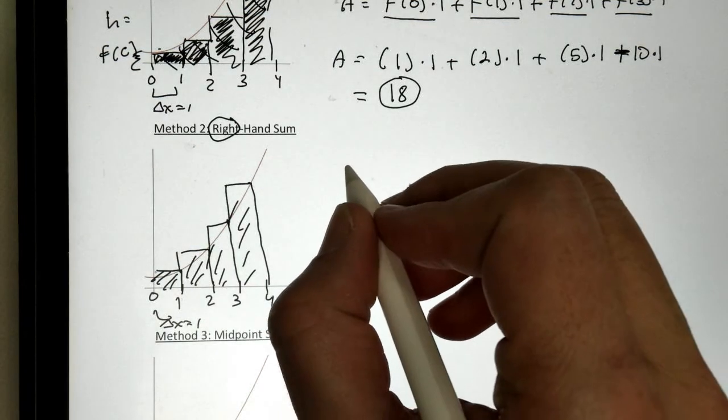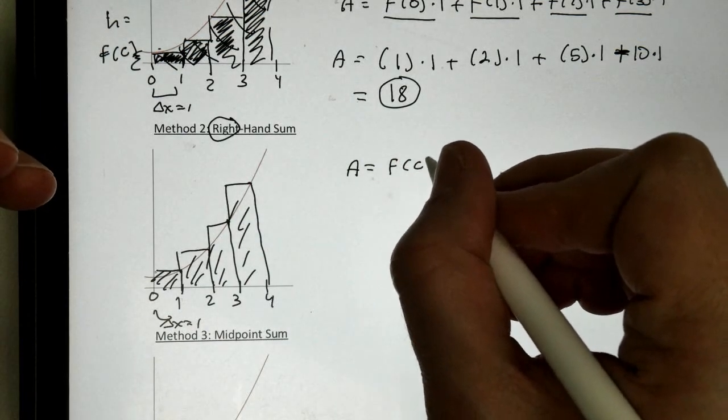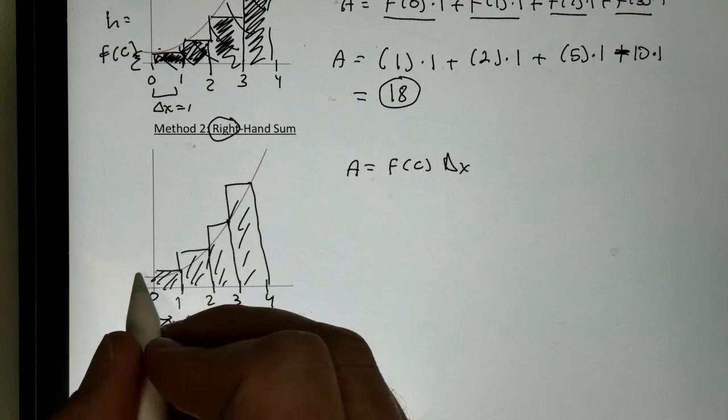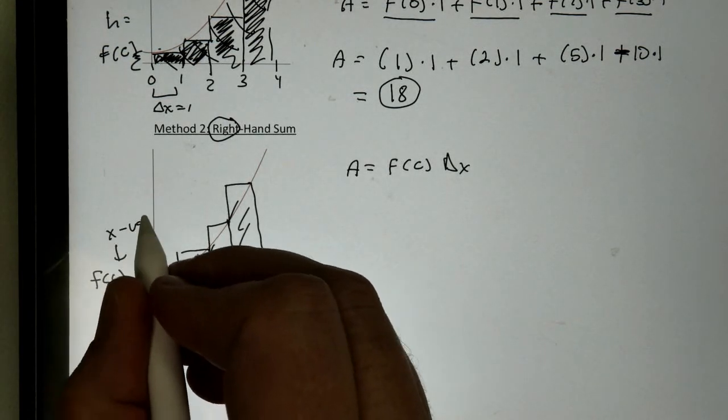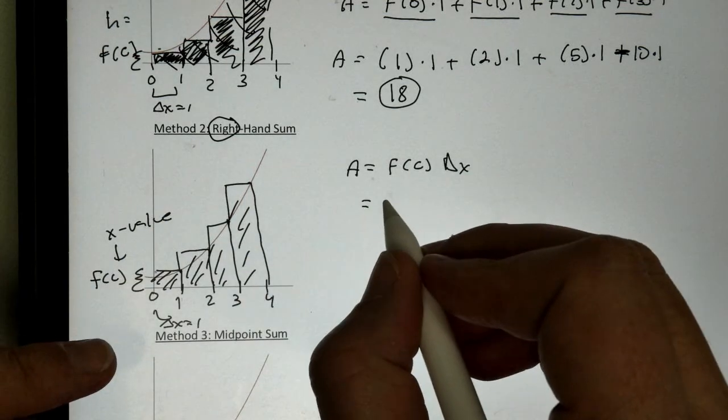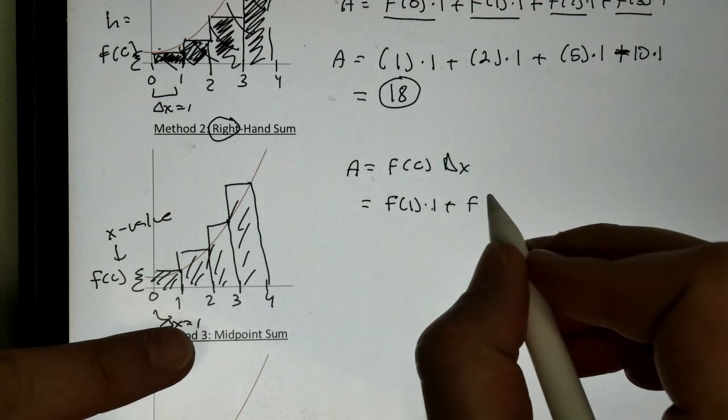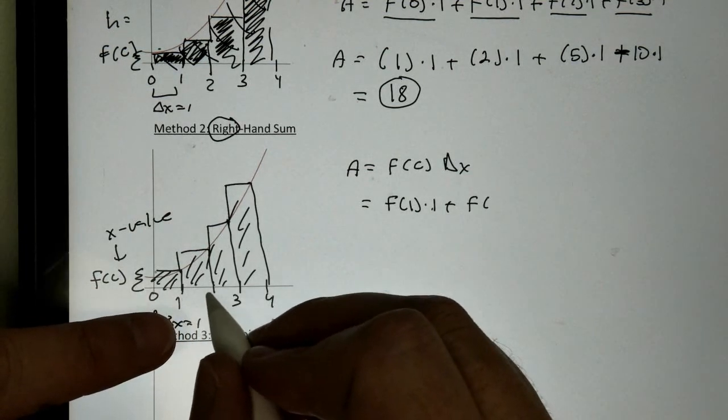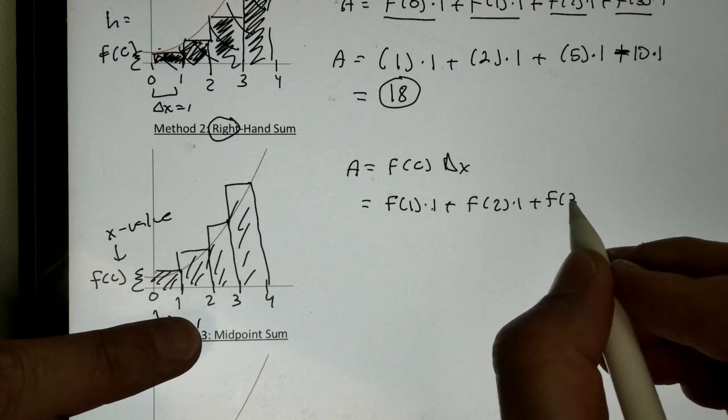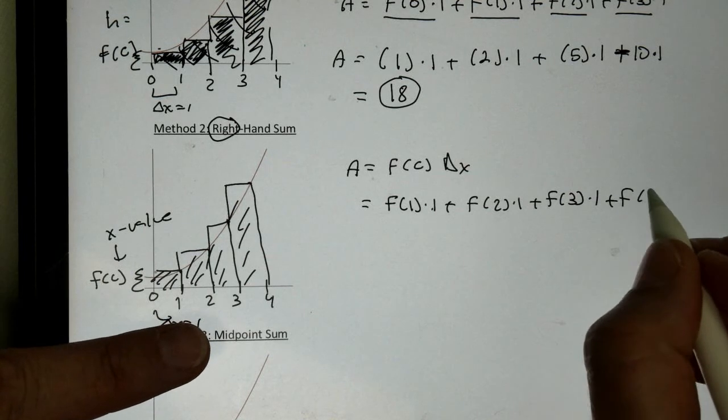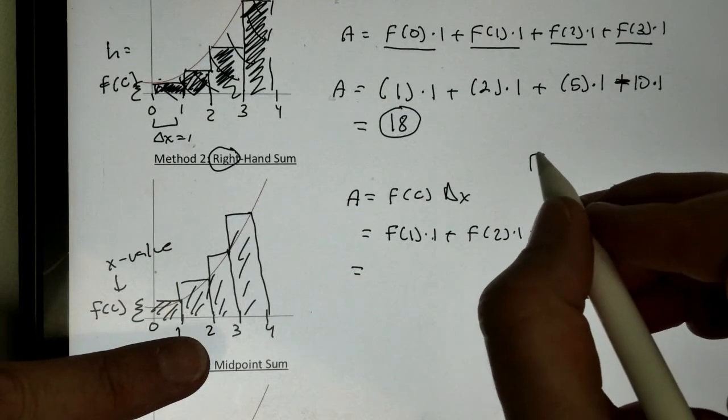So, when we do this one, our area, we're still going to use f of c delta x. Remember, f of c is whatever my x value that we picked. So, for the first one, we used 1 this time. Delta x is 1. Plus f of, for the second rectangle, we used 2 because 2 was on the right, times 1. Plus f of 3 times 1. And then plus f of 4 times 1.